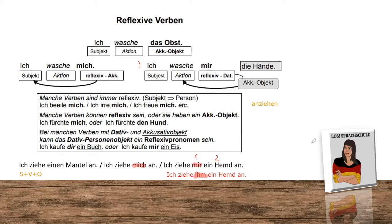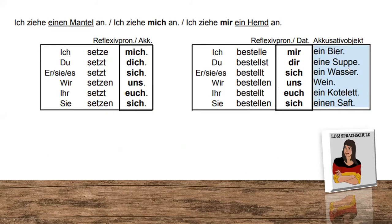Just remember: if you have an object in Akkusativ, you have to use a Dativ reflection. Some variations will follow in the future. Here we have it again super clear with our little tables. For example, the verb 'to sit' — you can even learn it in the dictionary with 'sich,' which indicates that it's reflexive.